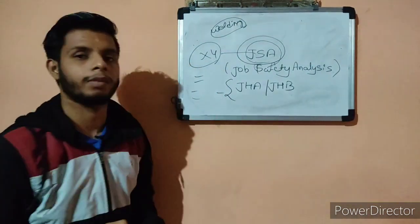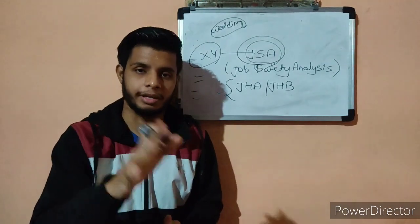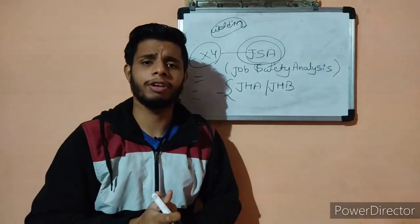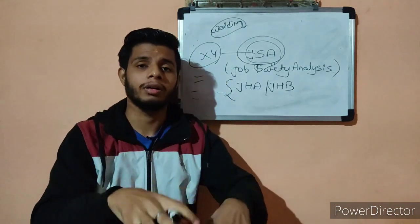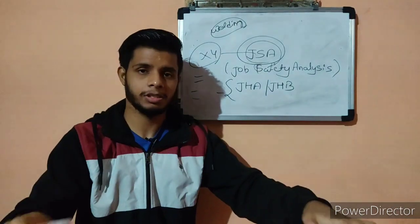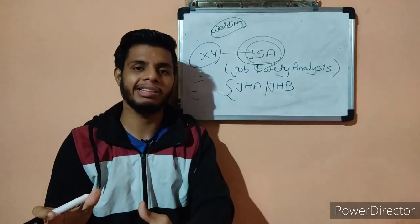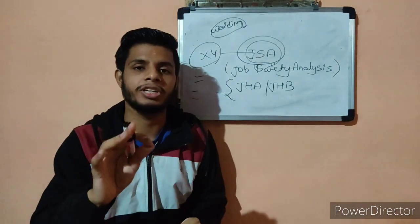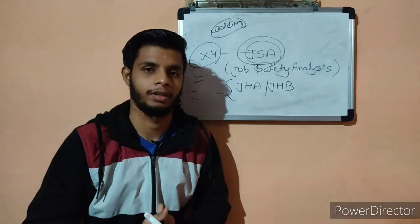In step number four, you need to implement the control measures. So to summarize: identification of the job or task; dividing or splitting that task into various steps; individually identifying the hazards from all those steps; and putting control measures in place. That is the procedure for carrying out a JSA.